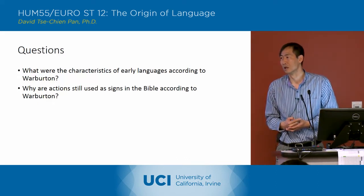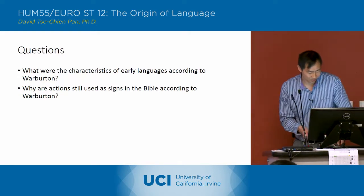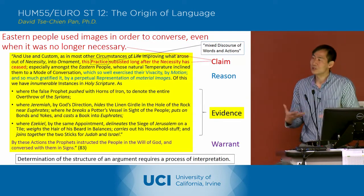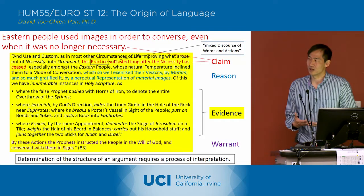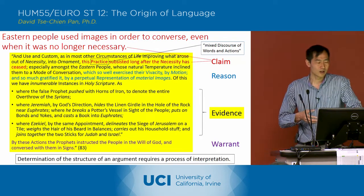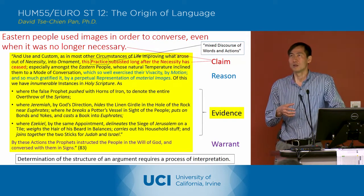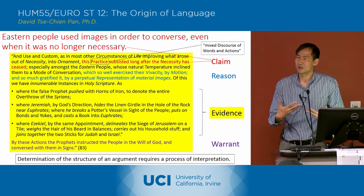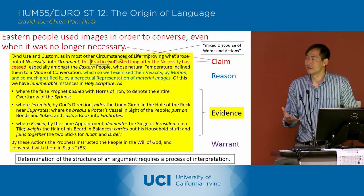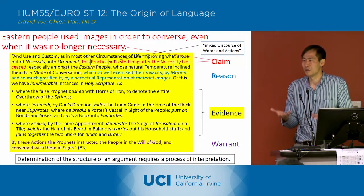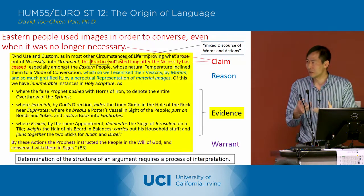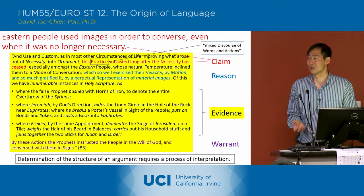A student mentions they identified the claim. The instructor explains: the claim is that people still use images in order to communicate. The reason is that images create a kind of vivacity in speech — they make the speech more colorful and exciting. That is the reason people still use images in their speech.